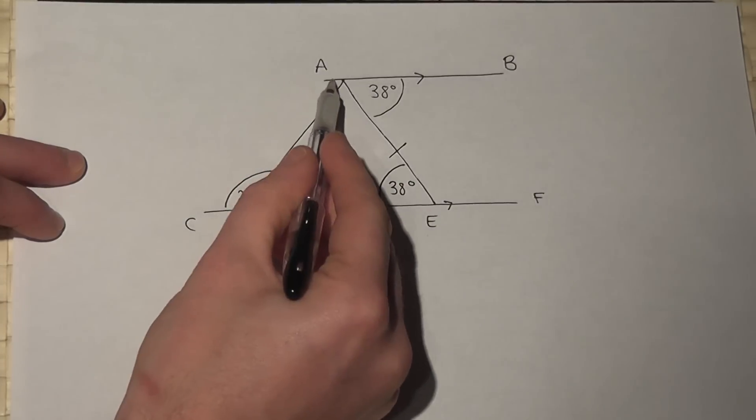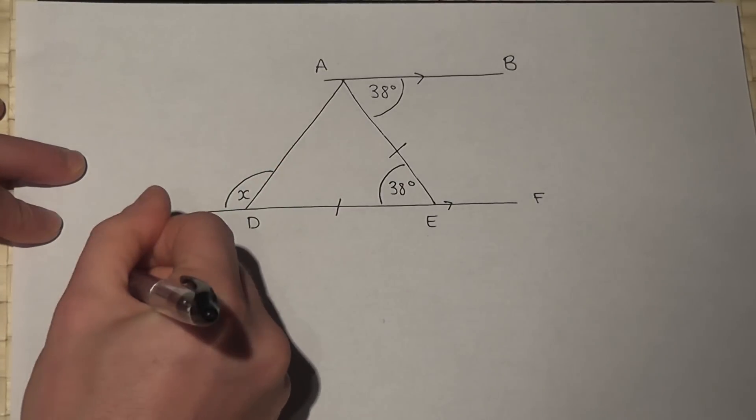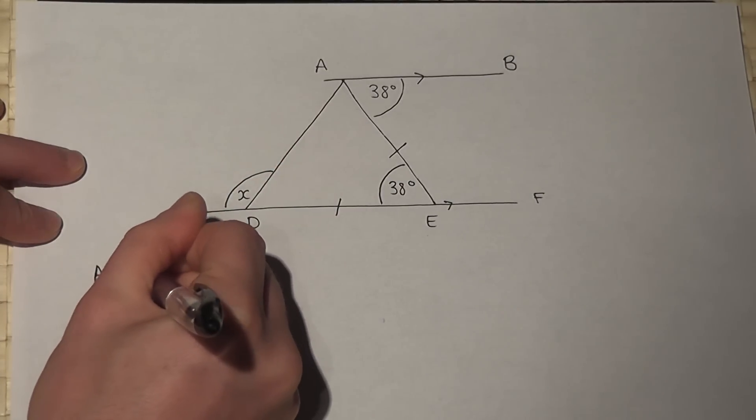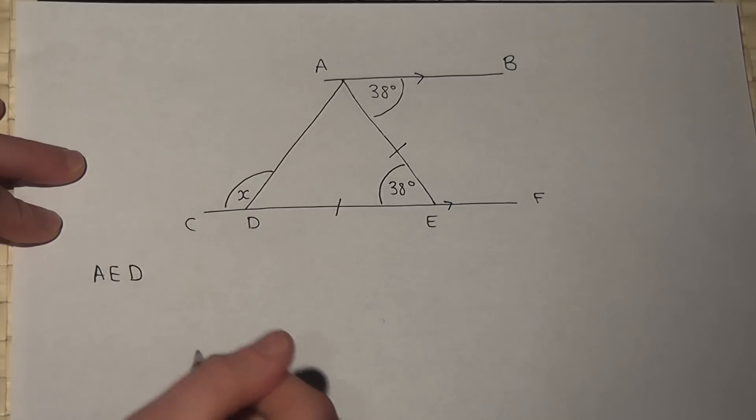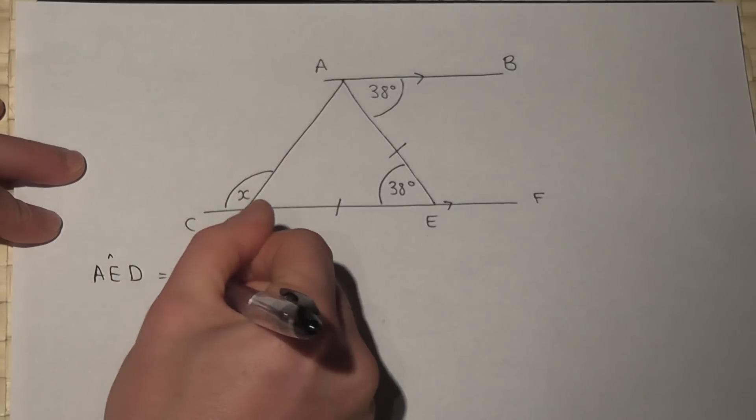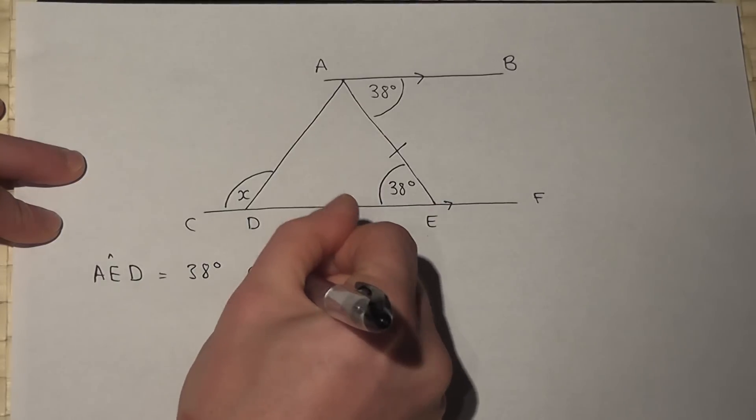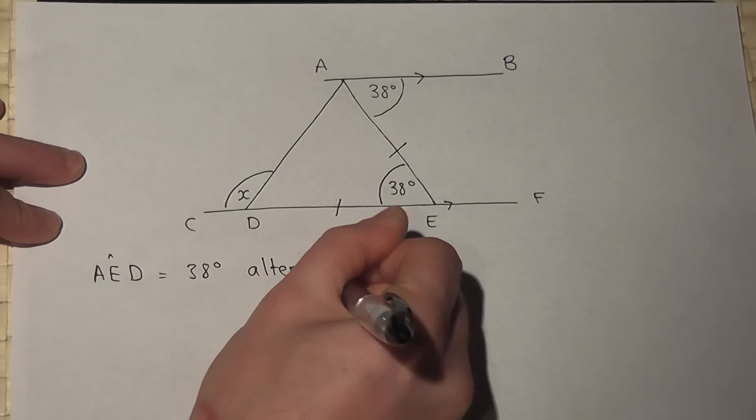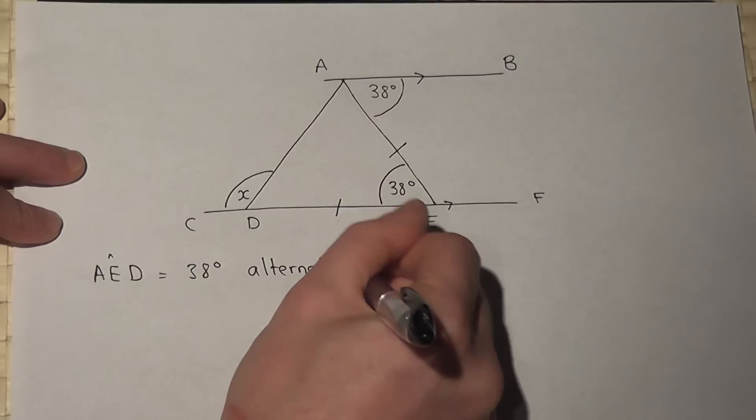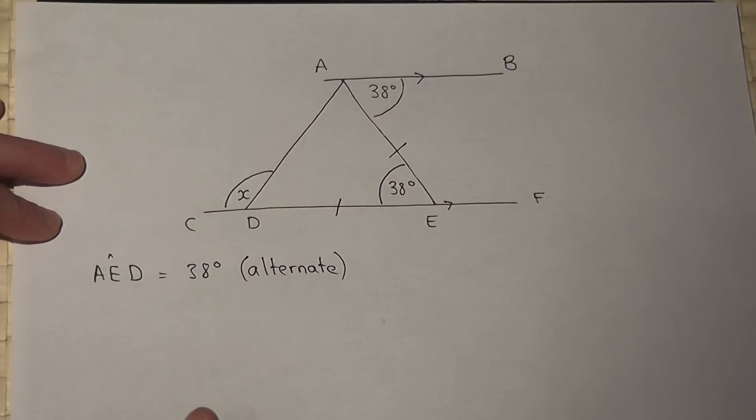This angle here, A to E to D. So angle AED equals 38 because it's alternate. That's the posh way to say a Z angle. So I found out this angle here is 38 degrees.